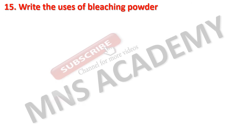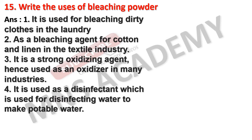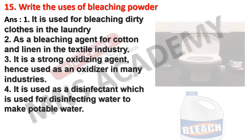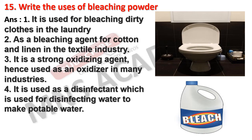Write the uses of bleaching powder. It is used for bleaching dirty clothes in the laundry and as a bleaching agent for cotton and linen in the textile industry. It is a strong oxidizing agent, hence used as an oxidizer in many industries. It is also used as a disinfectant for water to make potable water. The remaining questions will be discussed in the next episode.